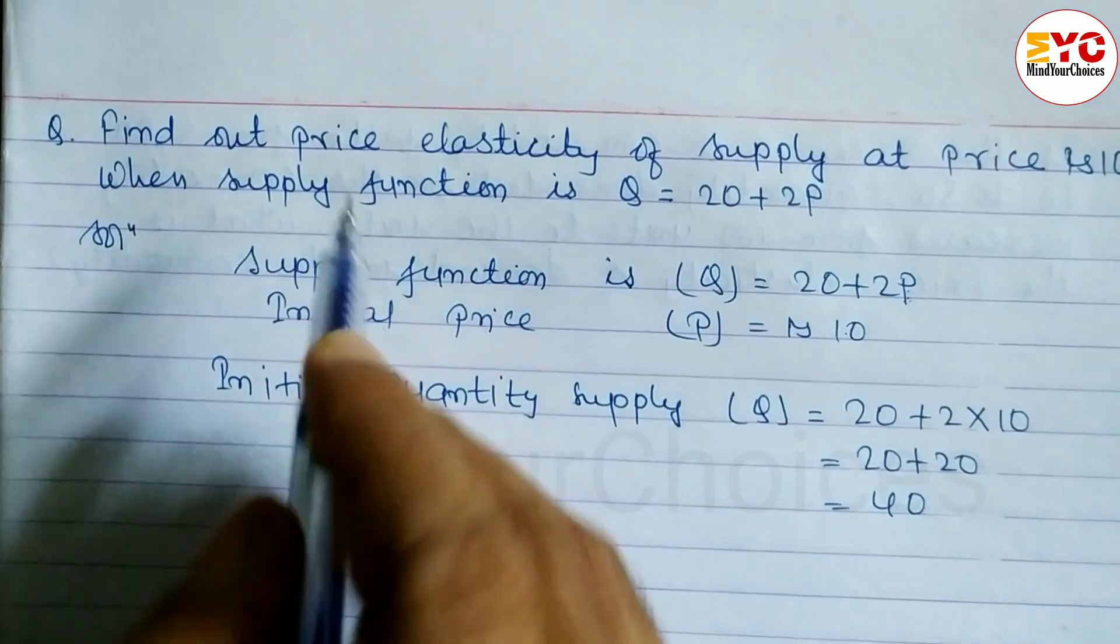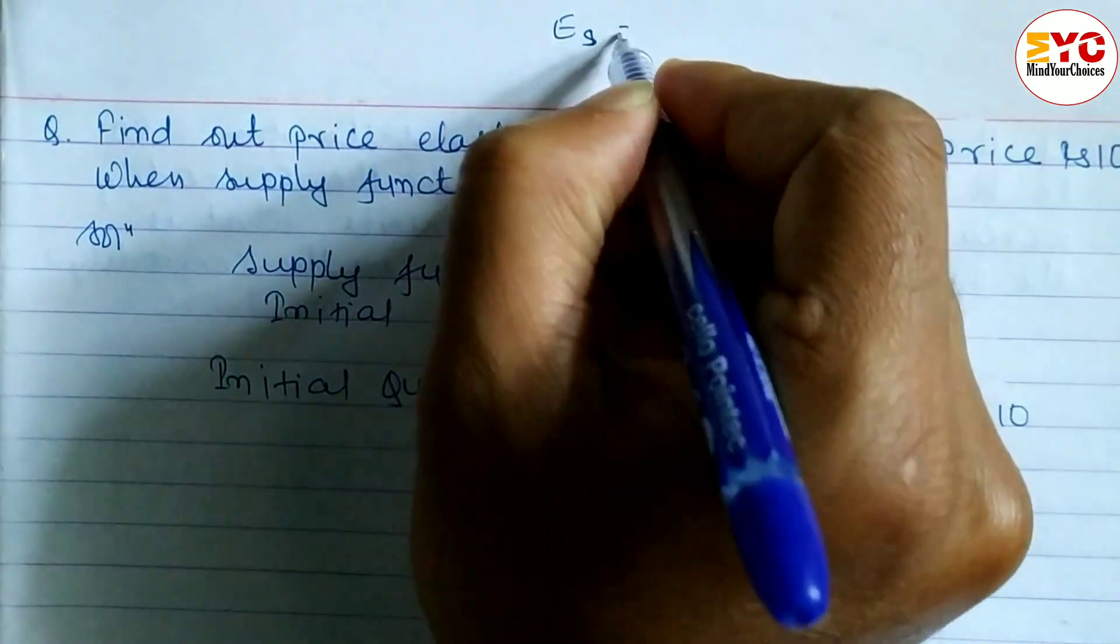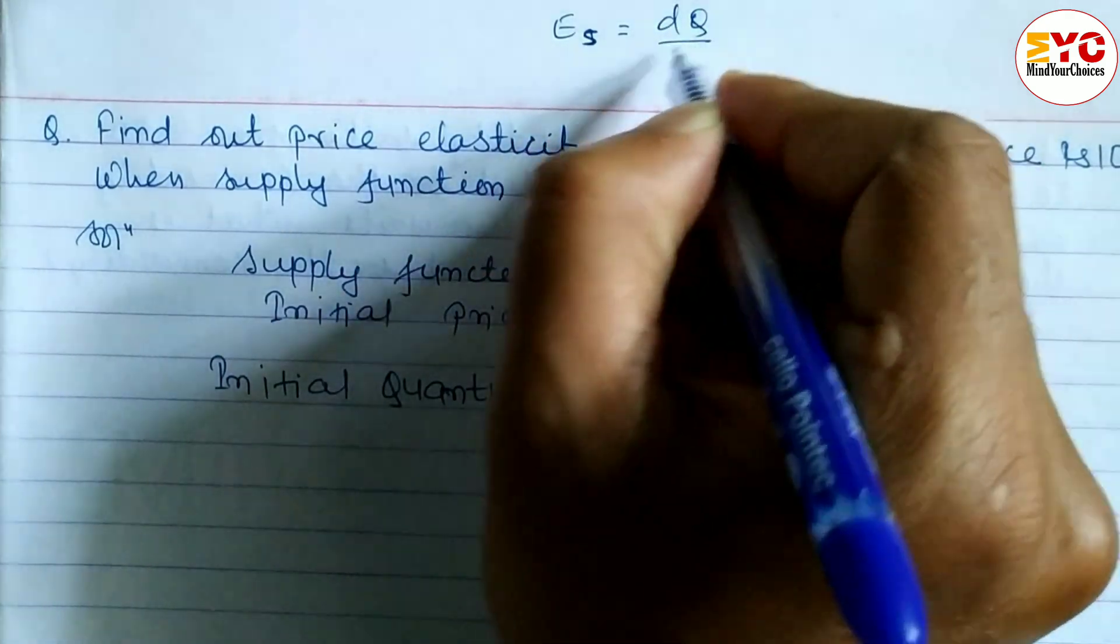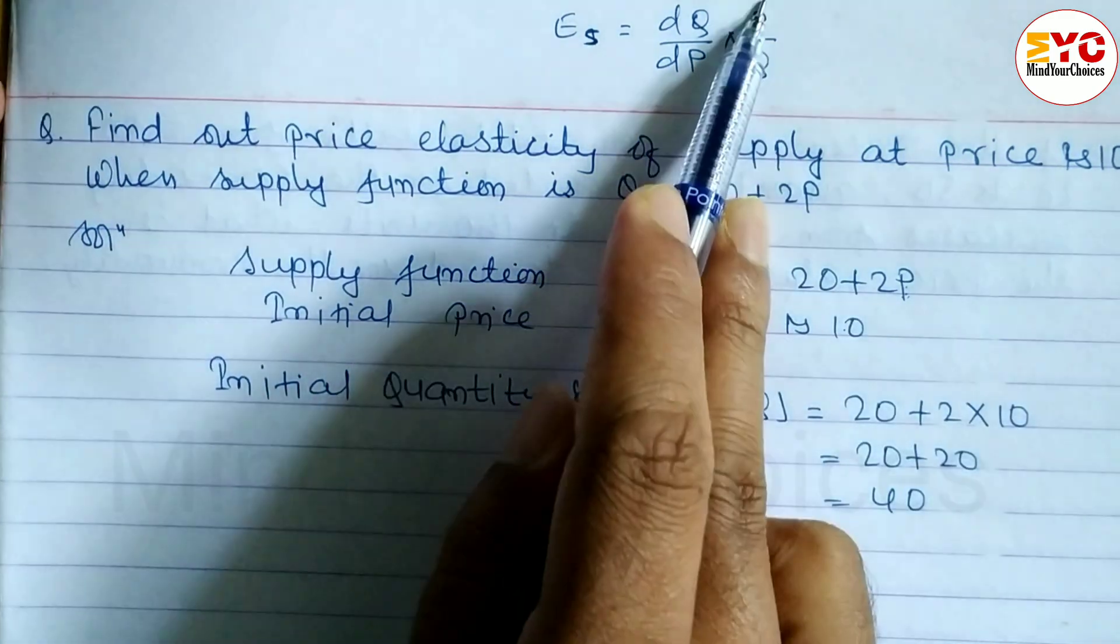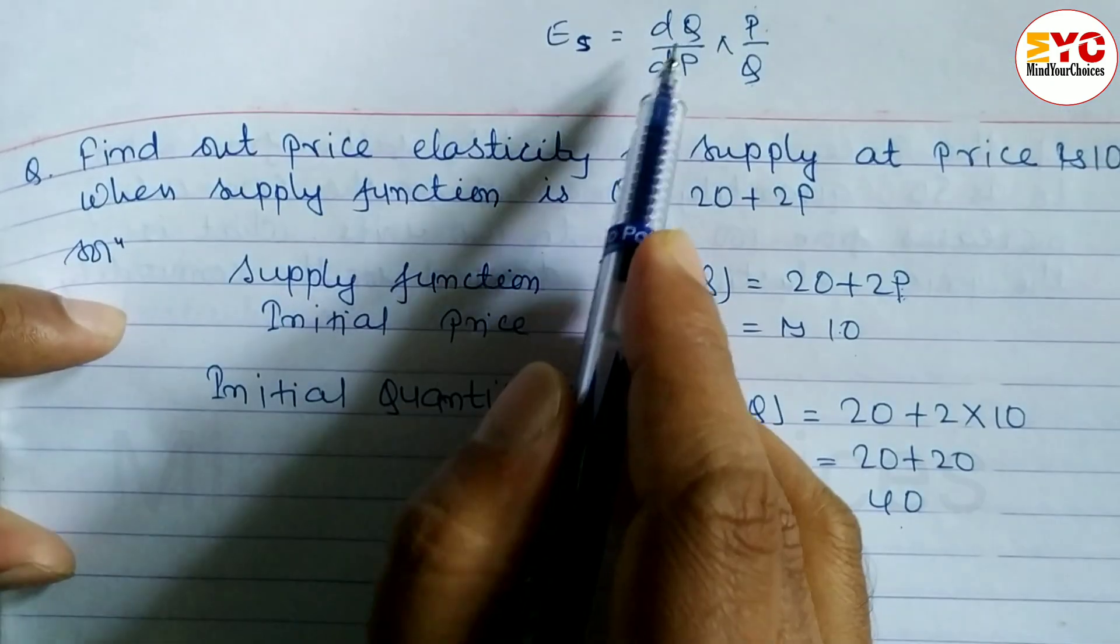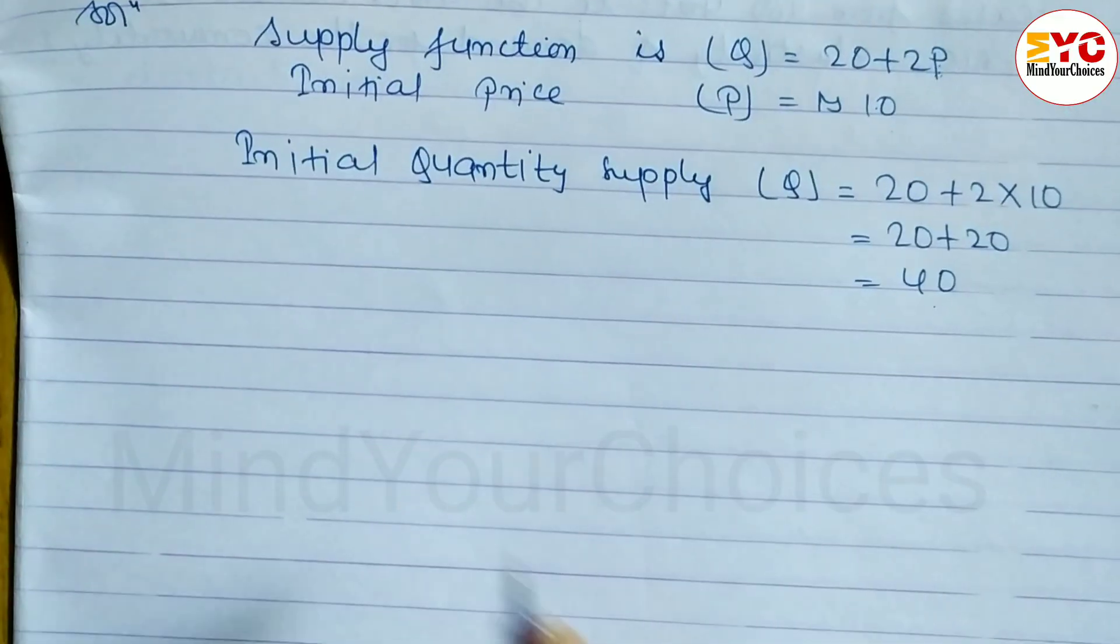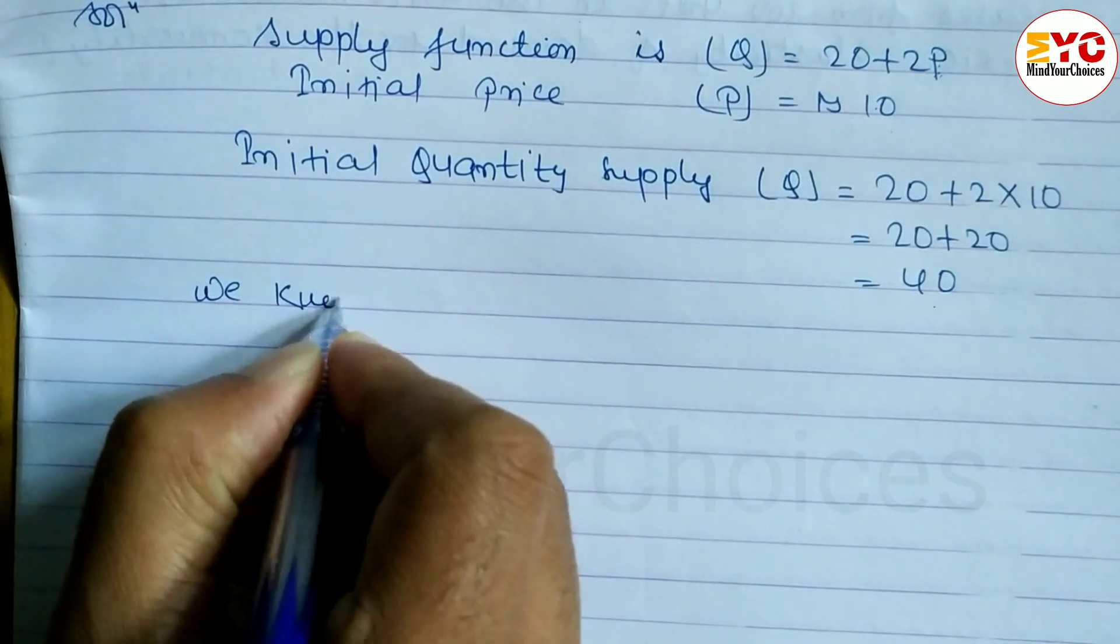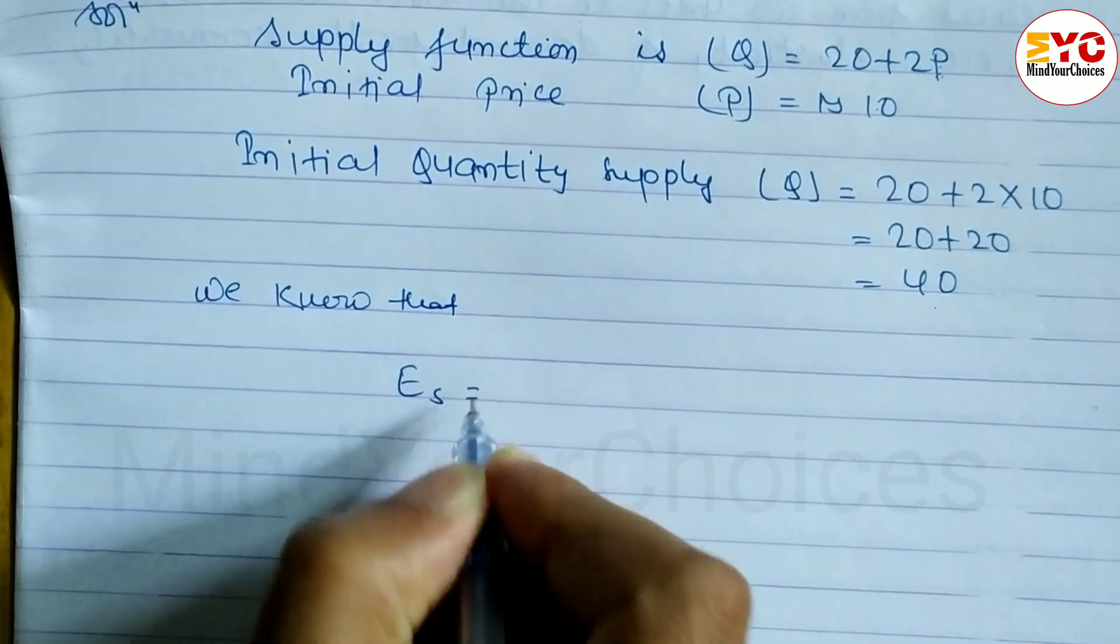After this, we know that price elasticity of supply formula is Es is equal to DQ by DP into P by Q. So what we have to do? P and Q we have, P is equal to 10 we have, Q is equal to 40 we have. Now we have to find out derivative of Q with respect to P.